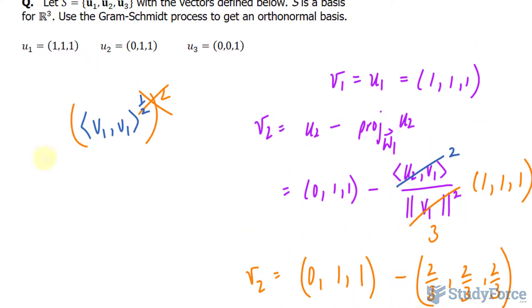Now we have to find V sub 3. And to find V sub 3, we will be subtracting U sub 3 with the projection of U sub 3 onto W sub 2. And just to be clear, that right there represents the space spanned by V sub 1 and V sub 2.